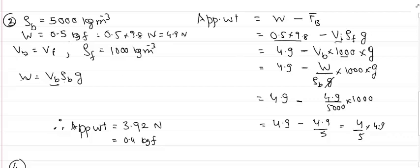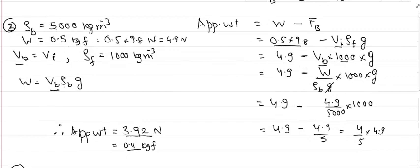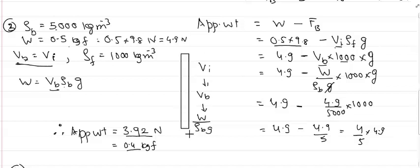Upthrust = VI × ρF × g. Since VI = VB = W/(ρB × g), the g terms cancel. With W = 4.9 N and ρB = 5000, upthrust = 4.9 × (1000/5000) = 0.98 N. Apparent weight = 4.9 − 0.98 = 3.92 Newton, or 0.4 kgf. The key learning: when fully immersed, VI = VB = W/(ρB × g).